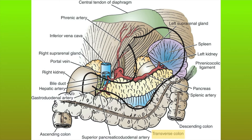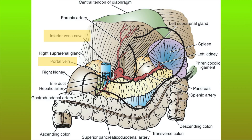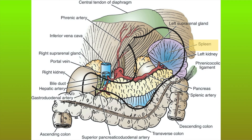The relations of the stomach posteriorly are important. We have the transverse colon, and just behind that we have the pancreas and above it the splenic artery and vein. The spleen, the right and left kidneys, the right and left suprarenal glands, the inferior vena cava and portal vein, the bile duct, the hepatic and gastroduodenal arteries, phrenic arteries, the central tendon of the diaphragm and the diaphragm itself.